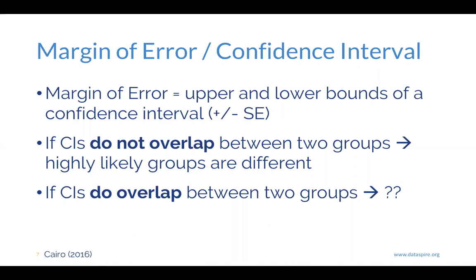The trick is: if the confidence intervals do overlap between two groups, we cannot say the opposite is true — we have no idea. It might be that our sample size isn't big enough, it might be that our numbers are biased in our sample, or it might be that the groups are similar and therefore not different. But we can't state with high likelihood that the groups are similar when the confidence intervals overlap. This is a tricky thing for students to grasp. It comes back to the idea that science is probabilistic, not deterministic — we say things are likely or unlikely. Some situations lead towards us being able to conclude things are more highly likely, but the opposite isn't always the case with statistics.